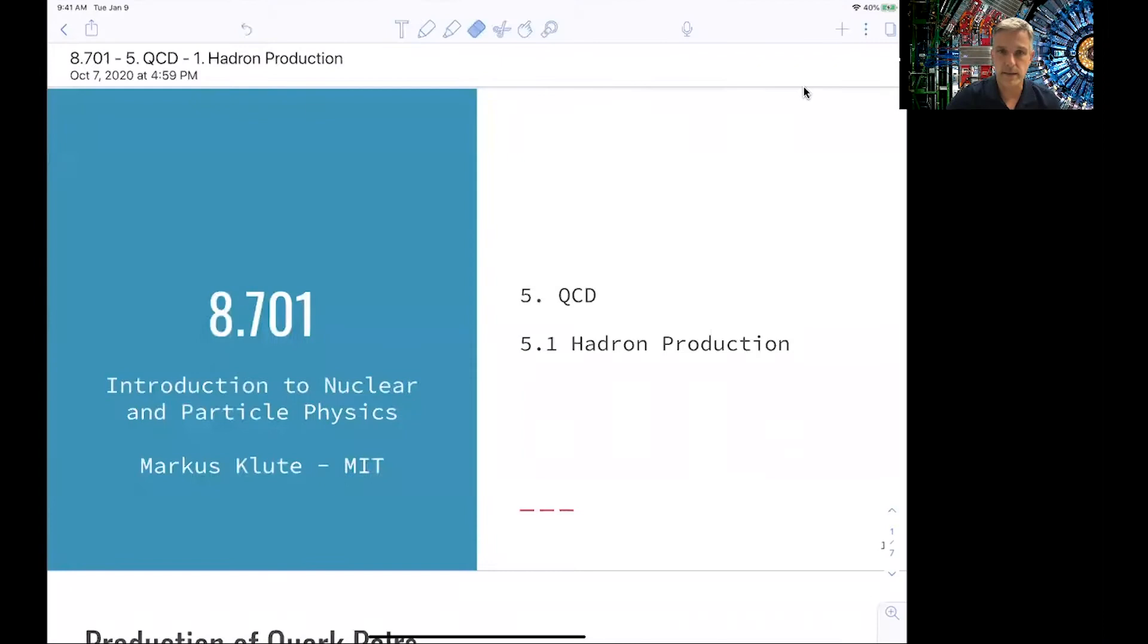Welcome back to 8701. So we start a new chapter now, QCD, or quantum chromodynamics. In this first lecture of this chapter, we talk about the production of hadrons. This is really meant as an introductory lecture, but we will also already see some very interesting and useful concepts.